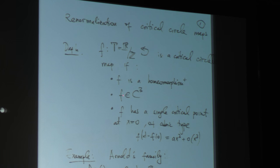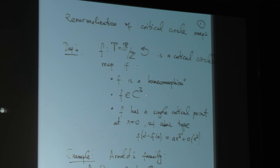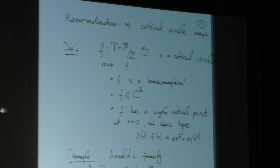For those who know, all of these conditions except the homeomorphism part can be weakened, and most of this theory will go through with some complications. C3 can be weakened to 2-plus-epsilon. The single critical point could be replaced with multiple critical points, finitely many. Cubic type — well, we really just need them to be non-flat. Since this is a homeomorphism, they'll be of an odd order, but the order itself doesn't have to be 3.